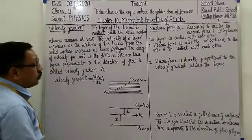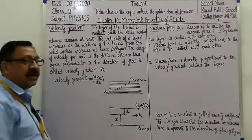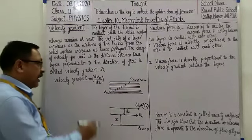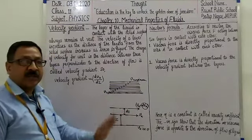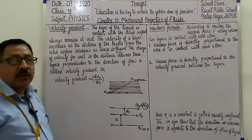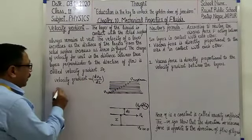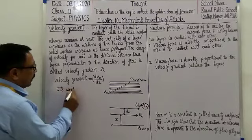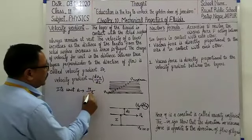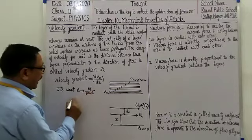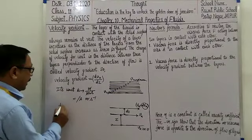दो layers के middle में जो velocity का difference है dvx divided by perpendicular distance between two layers — the ratio of difference in velocity between two layers and perpendicular distance between them is called velocity gradient. So velocity gradient is equals to dvx divided by dz. Its unit: velocity की unit है meter per second और distance की unit meter, तो meter cancel होकर unit हो जाती है per second या second inverse। और dimension की बात करें तो M⁰L⁰T⁻¹।